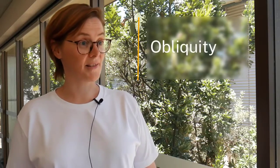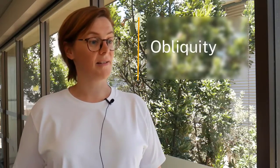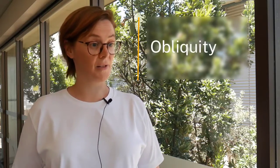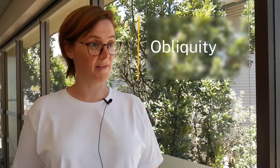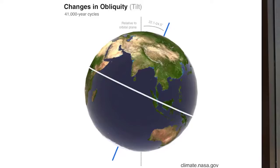Obliquity refers to the tilt of the Earth's axis. Over the last million years, axial obliquity has varied between 22.1 and 24.5 degrees perpendicular to Earth's orbital plane.